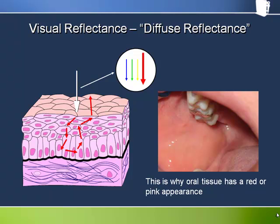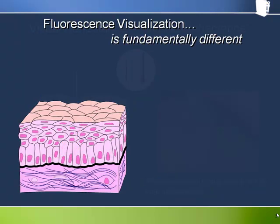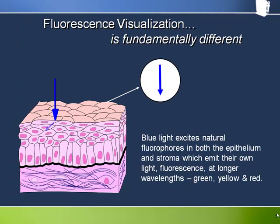Notice that no new photons are generated in the tissue — what comes back to our eye is a subset of what illuminated the tissue in the first place. Fluorescence visualization really is fundamentally different. When we illuminate the tissue with light of an appropriate wavelength, such as blue light, it enters the tissue just as it does for reflectance, but now it can get absorbed by special, naturally occurring molecules in the tissue called fluorophores.